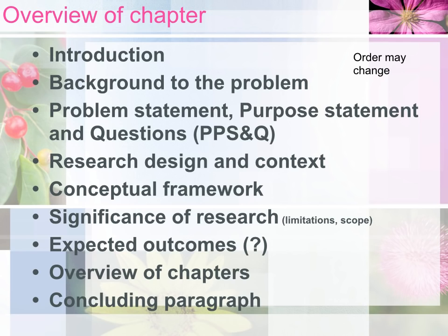This is generally what goes into the introduction chapter. There's an introductory paragraph. You need to somewhere explain the background to the problem, then explain the problem, which would include what the purpose of the research is and the research questions. Then you would need a section on the research design and research context, on the conceptual framework if that's important for your discipline or field, something on the significance of the research, and you could also include limitations, scope, and other sections like that. In some disciplines you would be expected to put the expected outcomes into the introduction, but not all disciplines expect this. Then you would have an overview of the chapters to show the reader what's coming, and then a concluding paragraph to this chapter.